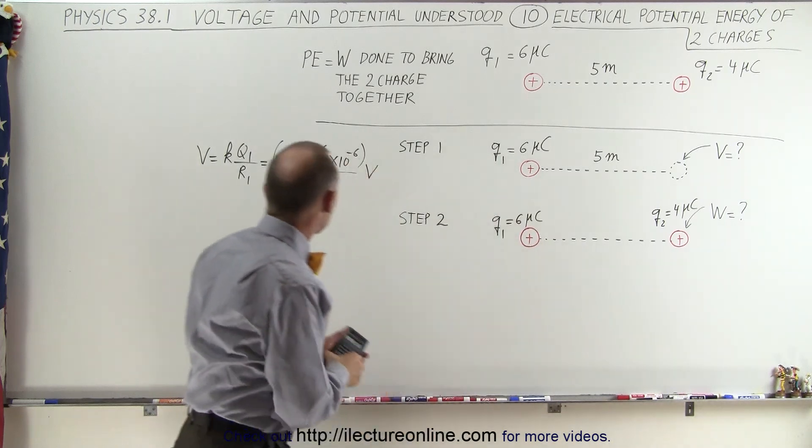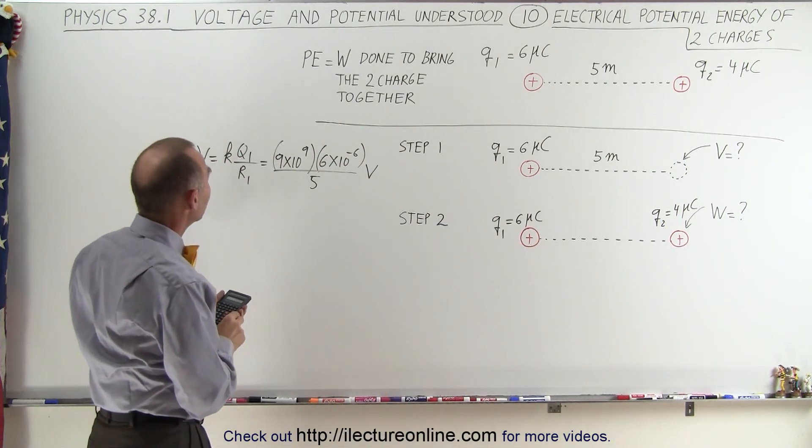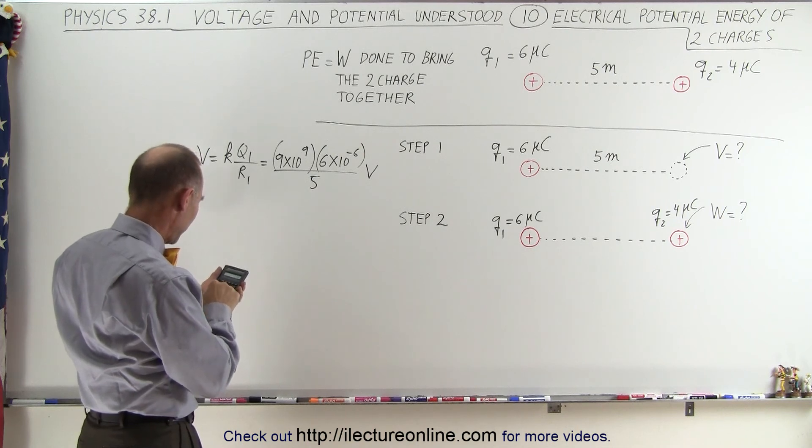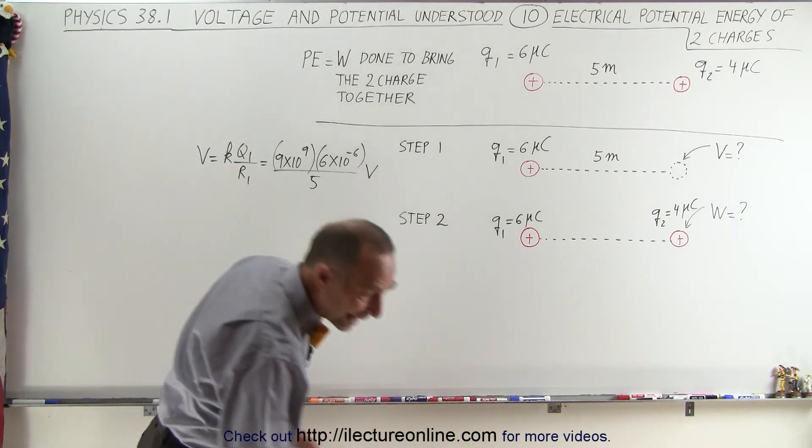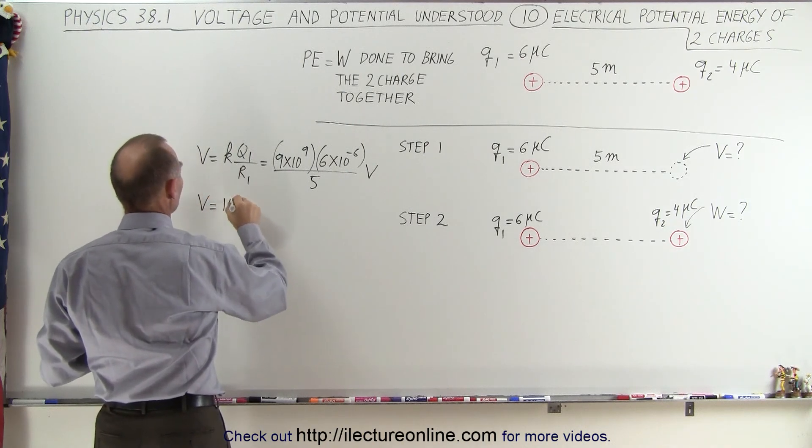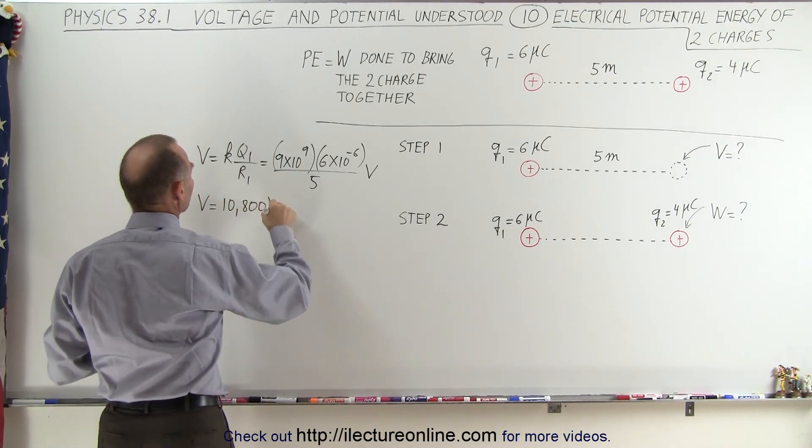So when we calculate that, we get 54, that would be 54,000 divided by 5, which is 10,800 volts. So the potential at that location is 10,800 volts.